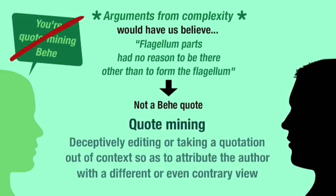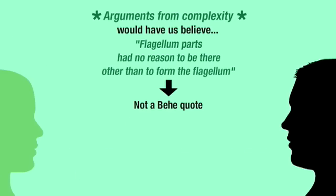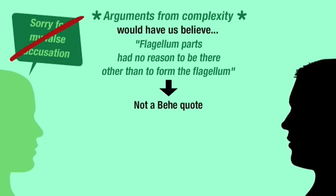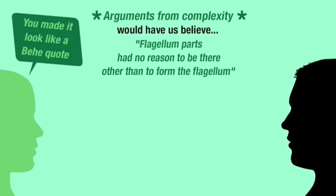But my accuser didn't bother to check his facts. He just saw the punctuation, leapt to a conclusion, and made a false accusation. Did he graciously admit this when it was pointed out? No. He dumped responsibility for his own error on me, saying I'd made it look like I was quoting Behe, when I'd made no mention of anyone or anything other than arguments from complexity.